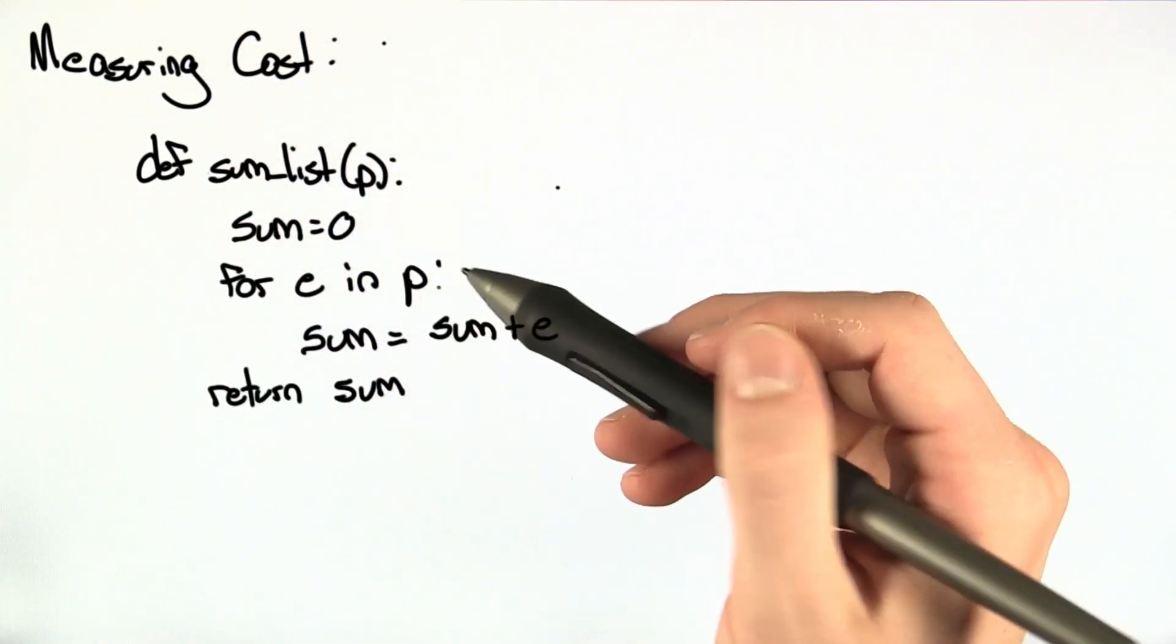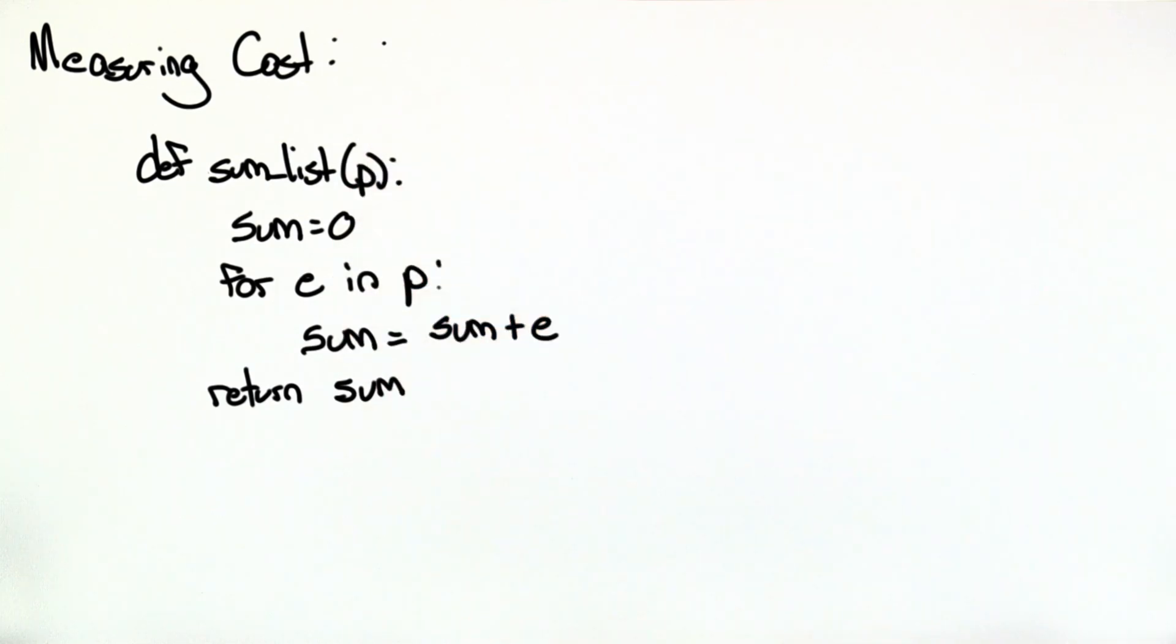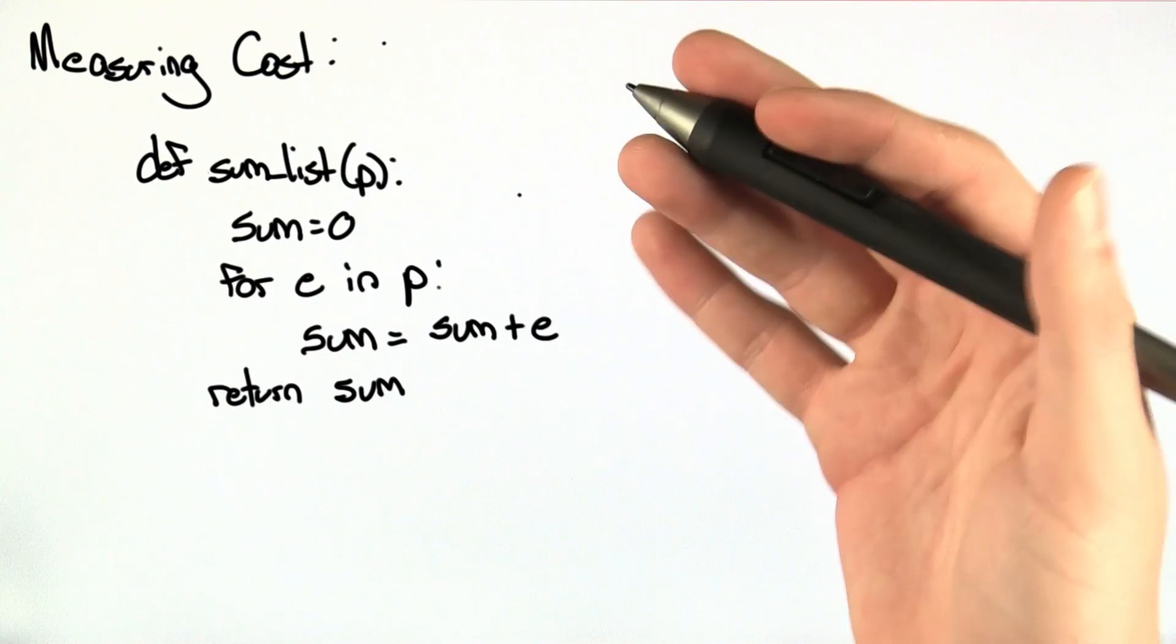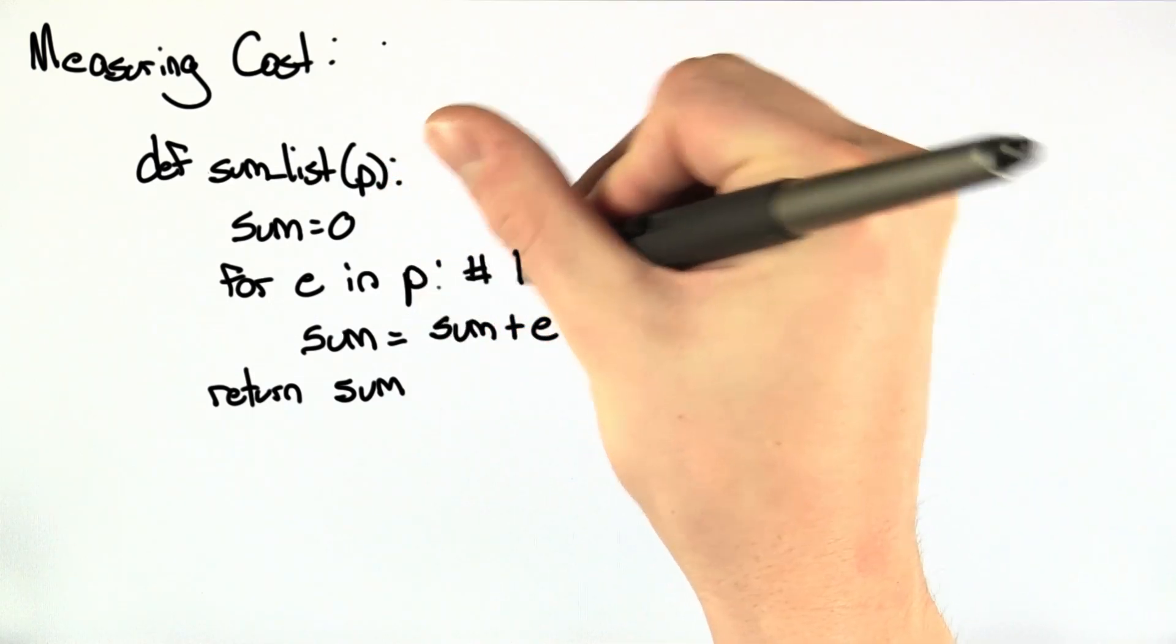This should look familiar. All sum list does is take an input list p and calculate the sum of the numbers in p. In this case, the worst and the best case are really the same because no matter what, you traverse this for loop for the length of p.